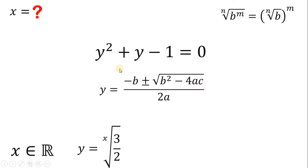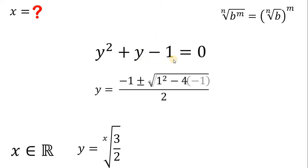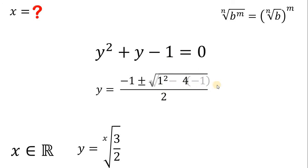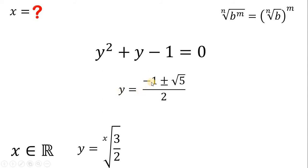The quadratic formula is: negative b plus or minus square root of b squared minus 4ac, all over 2a. The value of a, the coefficient of y squared, is 1. The value of b, the coefficient of y, is also 1. And c, the constant term, is negative 1. Simplifying: negative 4 times negative 1 is positive 4, and 1 squared is 1, so 1 plus 4 is 5. Therefore, y equals negative 1 plus or minus square root of 5, all over 2.